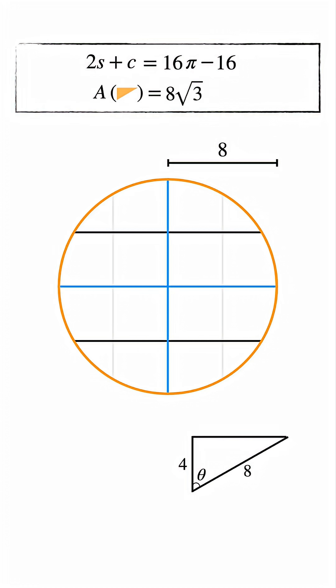Now focus on this angle, theta. The cosine of theta is 4 divided by 8, which simplifies to 1 half. Taking the inverse cosine of 1 half gives us an angle of 60 degrees.